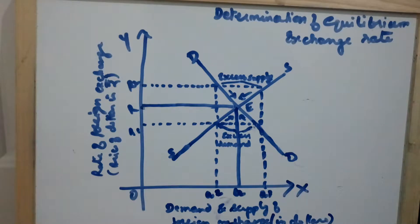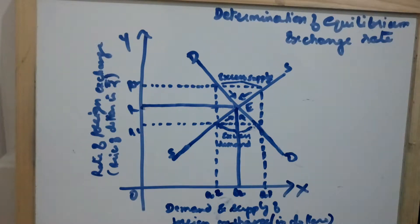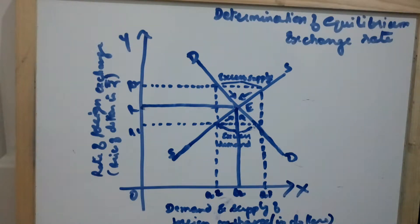Look at the diagram. You can see the demand and supply of foreign exchange is marked on the x-axis, and the rate of foreign exchange — that is the price of dollar in terms of rupee — is marked on the y-axis. DD is the demand curve which is sloping downward and SS is the supply curve of foreign exchange which slopes upwards.